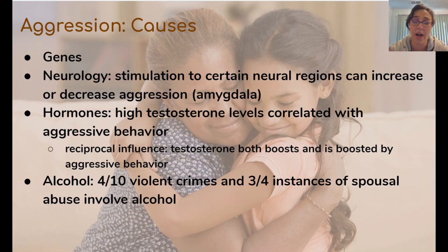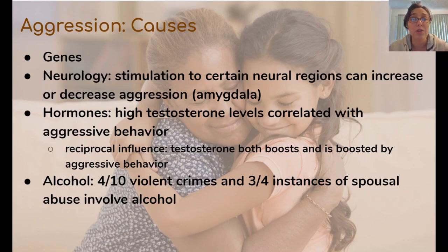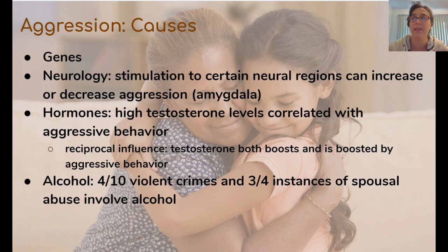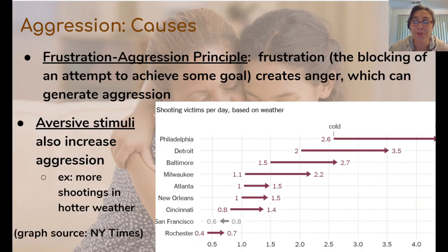This reciprocal relationship might be part of why we tend to see more physical aggression in male people — which we discussed when we talked about sex and gender. Alcohol also has a pretty strong influence over aggression. Four out of ten violent crimes and three out of four instances of domestic abuse involve alcohol, probably because alcohol lowers inhibitions and depresses the part of the frontal cortex responsible for self-control, which allows aggressive drives from the limbic system to be expressed more frequently.